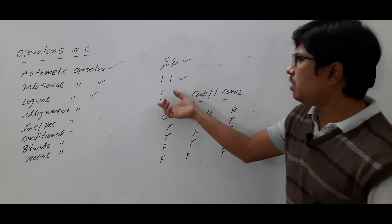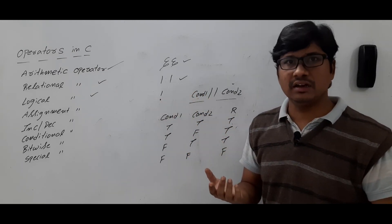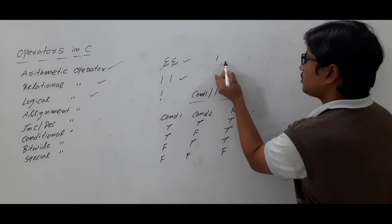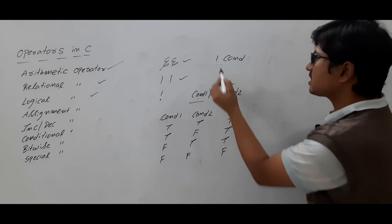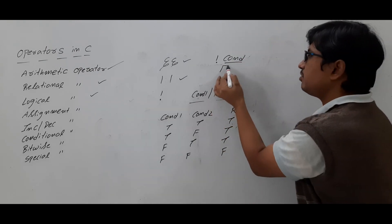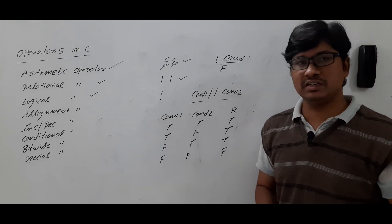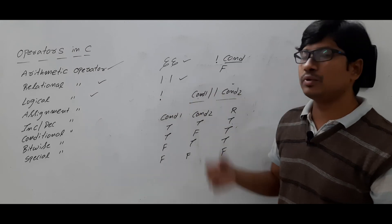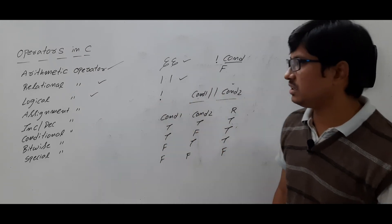You already know what logical NOT is — it is a negation, like a complement. If a condition is true, then the negation of that condition will become false. NOT true equals false. This is about logical NOT — it will act as a negation.